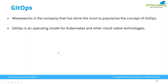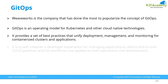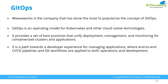GitOps is an operating model for Kubernetes and other cloud-native technologies. Whether it is Kubernetes or any other cloud-native technology, you can use GitOps. It provides a set of best practices that unify the deployment, management, and monitoring for containerized clusters and applications. GitOps is a set of best practices you can use to automate the deployment of applications as well as your containerized clusters.